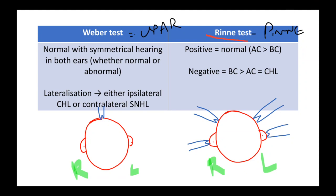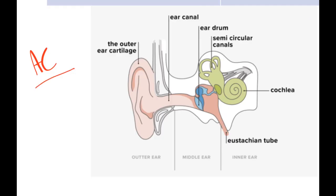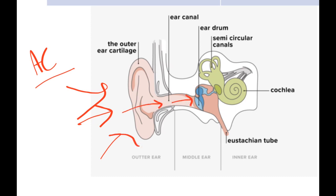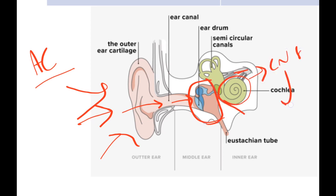Just imagine these to be the tuning forks. For Rinne's test we're going to check air conduction and bone conduction. In air conduction, we hear sounds from the air that get transmitted through the pinna and the external auditory canal into the middle ear, then into the cochlea, and through cranial nerve 8 into the brain.